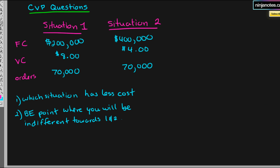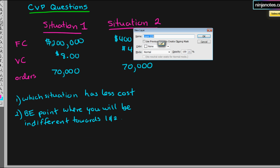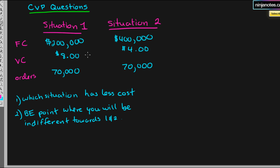We have two situations. Situation 1 has fixed costs of $200,000 and variable costs of $8 a unit. Situation 2 has fixed costs of $400,000 and variable costs of $4 a unit. Both have orders of 70,000 units. Which situation has less total costs?